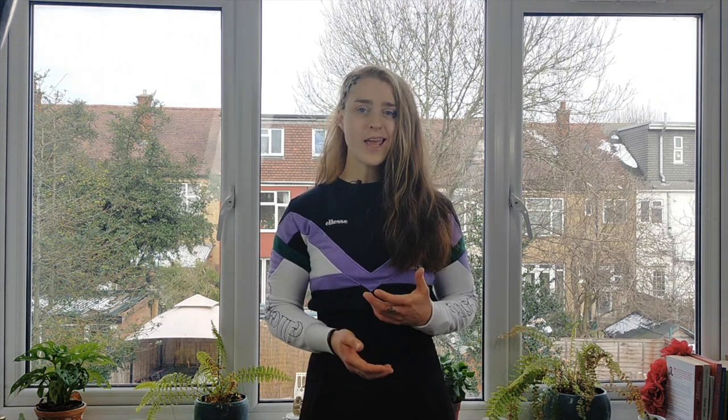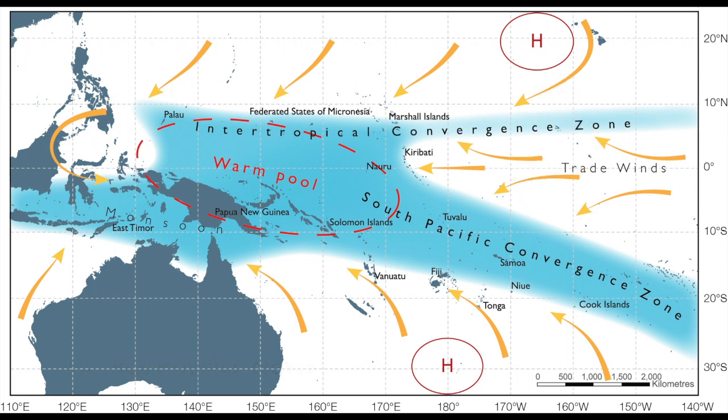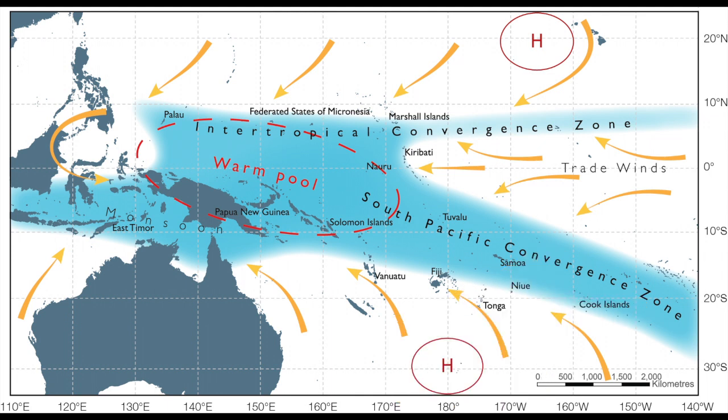Much like ENSO, the Inter-decadal Pacific Oscillation, or IPO, is a climate pattern that schleps warm water around the Pacific in distinct cycles, except unlike ENSO it happens over much longer time scales, say 15 to 30 years. Generally in the positive phase of the IPO we have a much warmer tropical Pacific and a much cooler subtropical Pacific, but it's a bit more nuanced than that. In the Pacific we have something called the South Pacific Convergence Zone, where you get loads of rainfall along a diagonal band that stretches northwest to southeast across the tropical Pacific. It basically acts as a diagonal divide between northeast and southwest, and arises because of pressure differences between different parts of the Pacific Ocean.